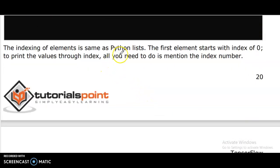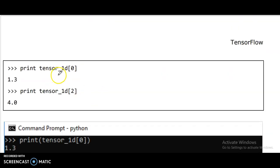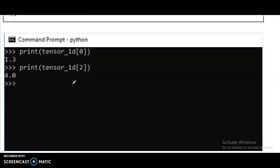The index of elements is same as Python list. The first element starts with index of 0. To print the value through index you need to mention the index number. Print tensor 1d[0], print tensor 1d[2].